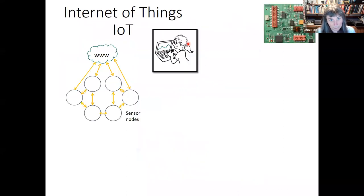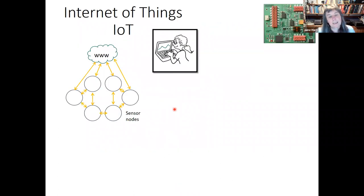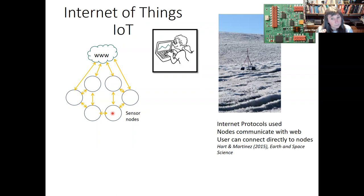Over time we developed more towards the idea of Internet of Things, or IoT. The difference is that while an environmental sensor network is one-way — from the nodes to the internet — Internet of Things is more a two-way process. In theory you can talk from the internet back down to the sensor nodes and change what they sense. It's more dynamic. Each sensor node is essentially like a website, which makes it much easier to use.